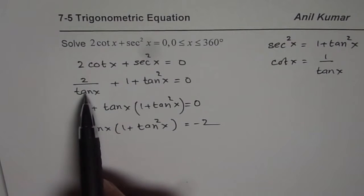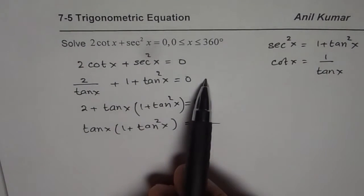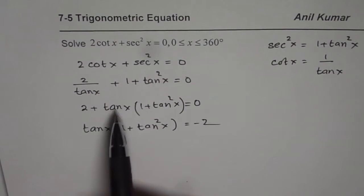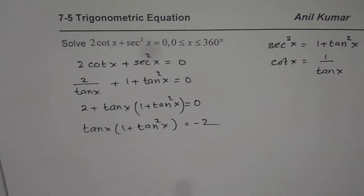Or at this stage you could have taken 2 over tan x on the right side and then multiplied by tan x. So you get the same thing as we have got here.